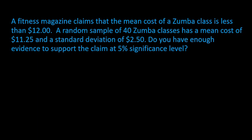Let's read through the problem so we can look for keywords that help us decide we're going to use the t-test. A fitness magazine claims that the mean cost of a Zumba class is less than $12. Anytime you see the word 'mean,' that needs to trigger that you're only talking about one mean, and you're going to use either the z-test or the t-test.